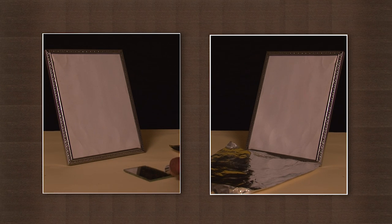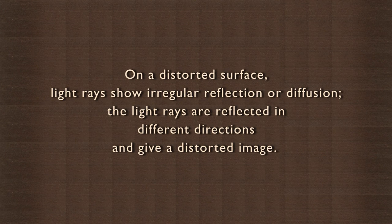But the aluminum surface is distorted. On a distorted surface, the light rays show irregular reflection or diffusion, and the light rays are reflected in different directions, giving a distorted image. Rough, unpolished surfaces give such reflections.